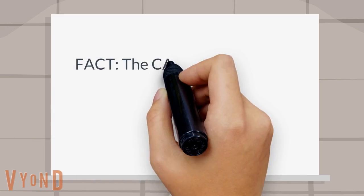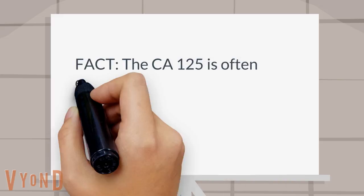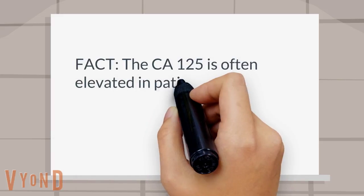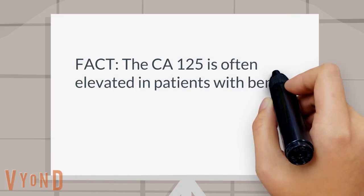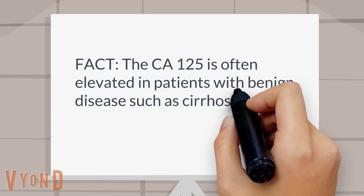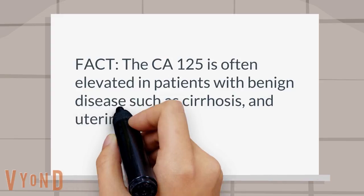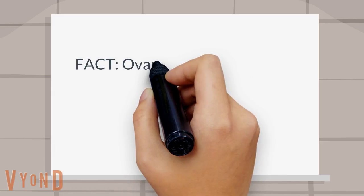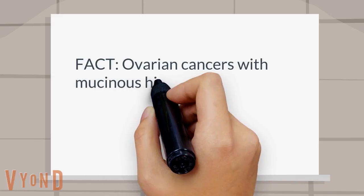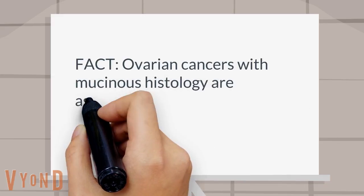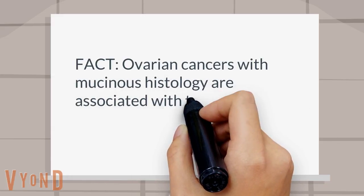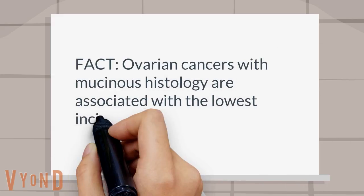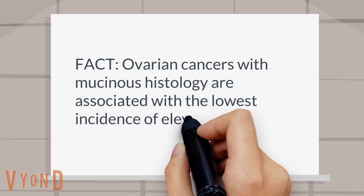Fact: the CA125 is often elevated in patients with benign disease such as cirrhosis and uterine leiomyoma. Fact: ovarian cancers with mucinous histology are associated with the lowest incidence of elevated CA125.